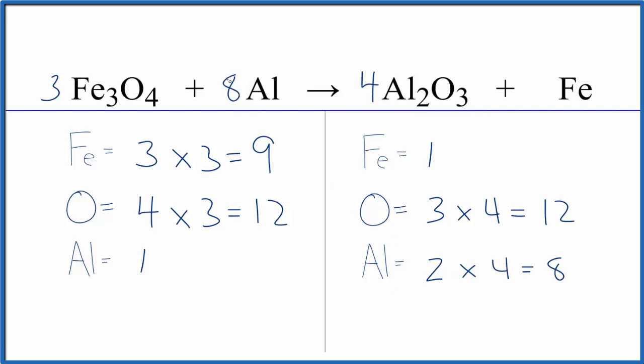We put an eight as our coefficient. One times eight equals eight. And then for iron we need nine, so we'll just put a nine here as our coefficient. One times nine equals nine. We're done. This equation is balanced.